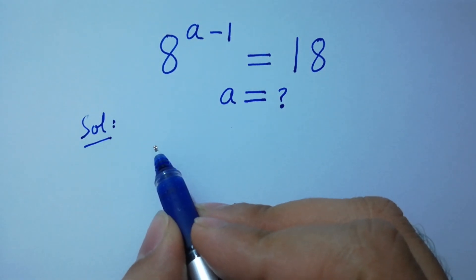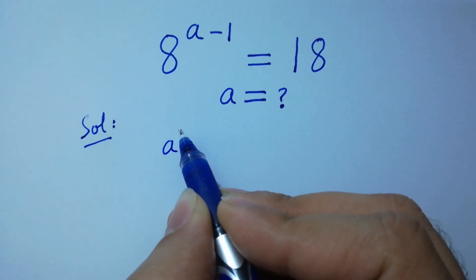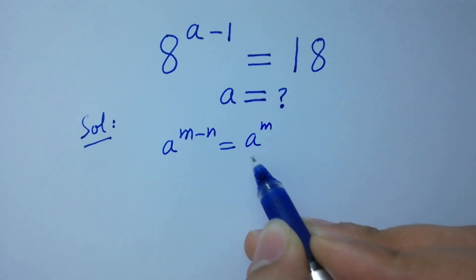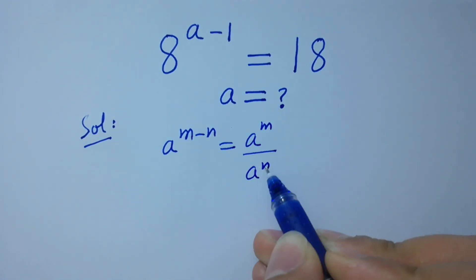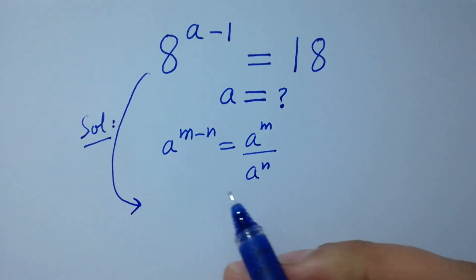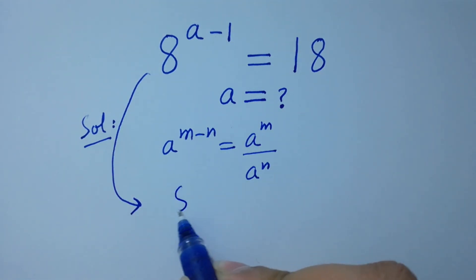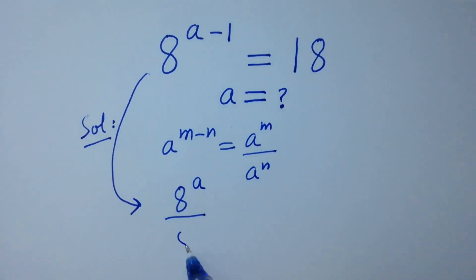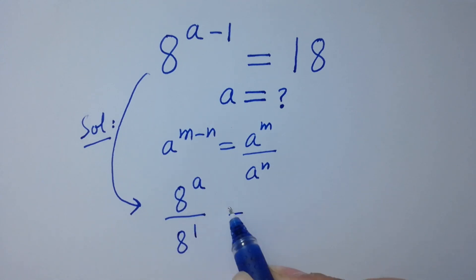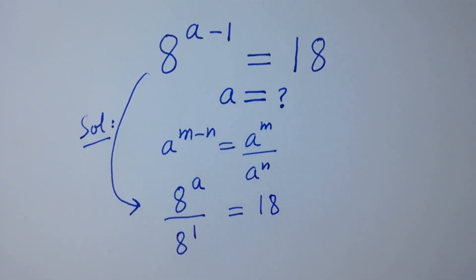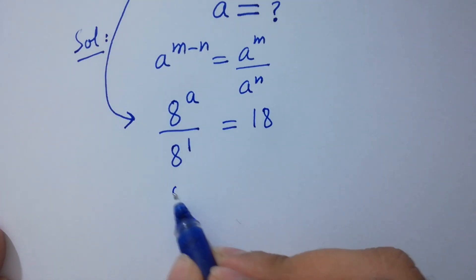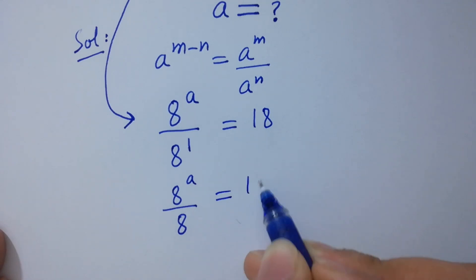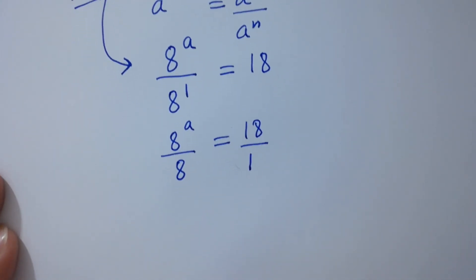As we know, a to the power m minus n equals a to the power m over a to the power n. Then it will be 8 to the power a over 8 to the power 1 equals 18, which is the same as 8 to the power a over 8 equals 18 over 1.